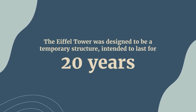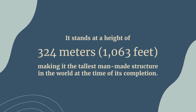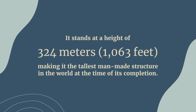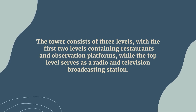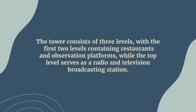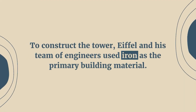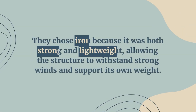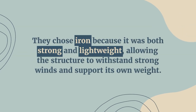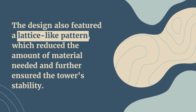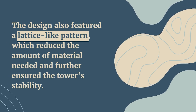Design and planning: The Eiffel Tower was designed to be a temporary structure, intended to last for 20 years. It stands at a height of 324 meters — 1,063 feet — making it the tallest man-made structure in the world at the time of its completion. The tower consists of three levels, with the first two containing restaurants and observation platforms, while the top level serves as a radio and television broadcasting station. Eiffel and his team used iron as the primary building material because it was both strong and lightweight, allowing the structure to withstand strong winds. The design also featured a lattice-like pattern, which reduced the amount of material needed and further ensured the tower's stability.